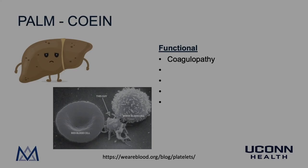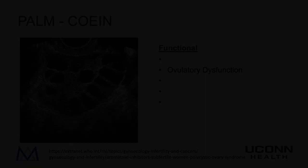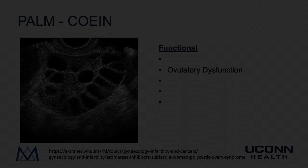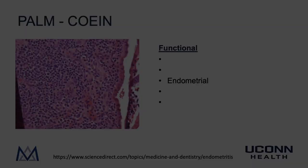Moving on to the functional causes of abnormal uterine bleeding. The first is coagulopathy, which can be caused by liver disease or platelet dysfunction. The O in COIN stands for ovulatory dysfunction. Polycystic ovarian syndrome accounts for the majority of ovulatory dysfunction; however, conditions such as hyperprolactinemia, hyper- and hypothyroidism, obesity, anorexia, and the female athlete triad are also causes of ovulatory dysfunction.